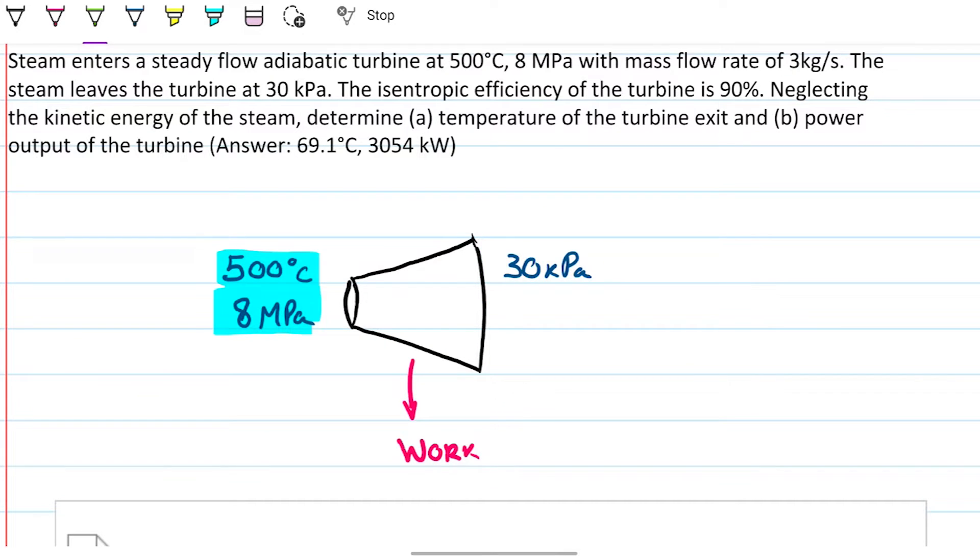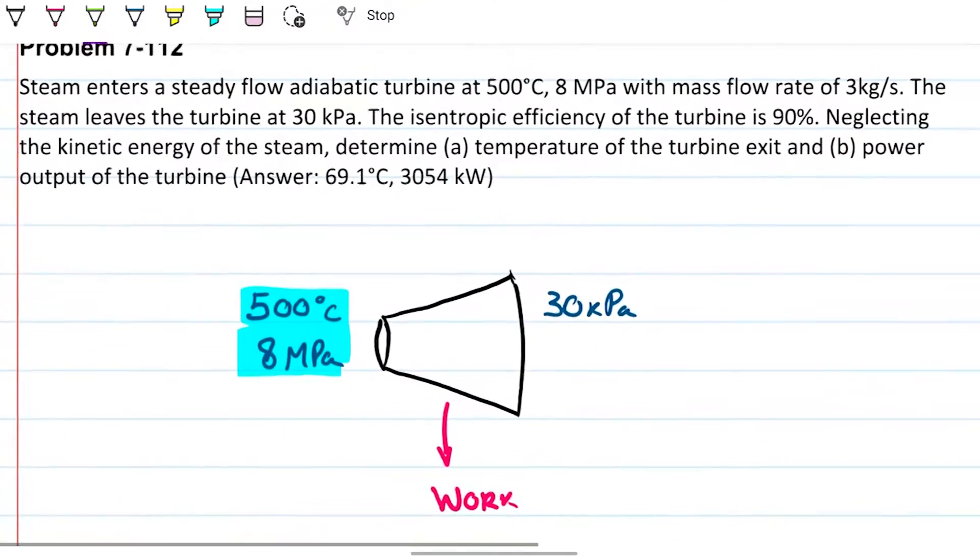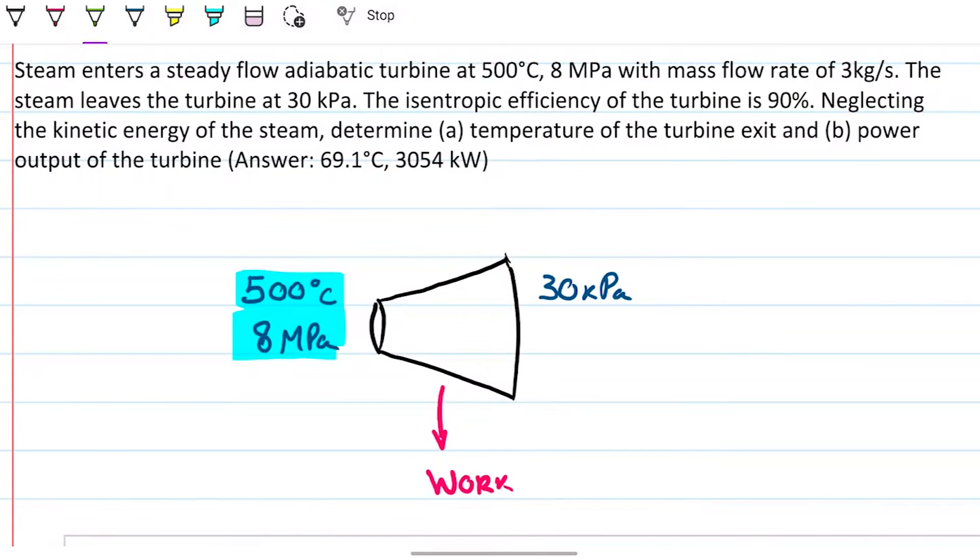So the problem statement reads, this is by the way problem 7.112: steam enters a steady flow adiabatic turbine at 500 degrees Celsius and 8 megapascals with mass flow rate of 3 kilograms per second. The steam leaves the turbine at 30 kilopascals. The isentropic efficiency of the turbine is 90%. Neglecting the kinetic energy of the steam, determine the temperature of the turbine exit and the power output of the turbine.